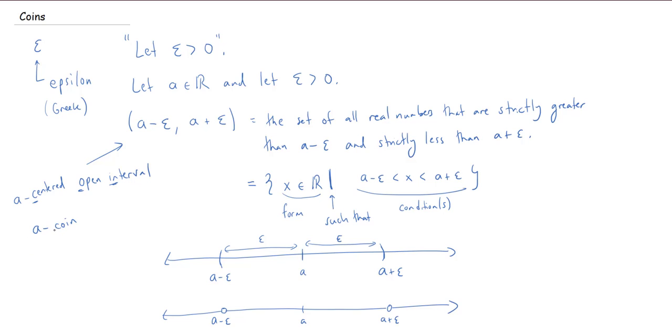Okay. A, C, O, I, N, centered open interval. Okay. And if I need to tell you how big the interval is, that is, what is the radius, right? How far from A to the endpoint? I could say an A coin with radius epsilon. Okay. So that's what this guy here is.